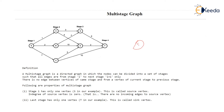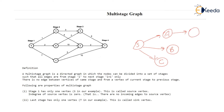For instance, if I have a graph where there is an edge from S to A, S to B, S to C, and then an edge from A to D and D back to S — this is not a multi-stage graph. Because there is an edge from, let's say, stage 3 back to stage 1, which is not allowed in a multi-stage graph.